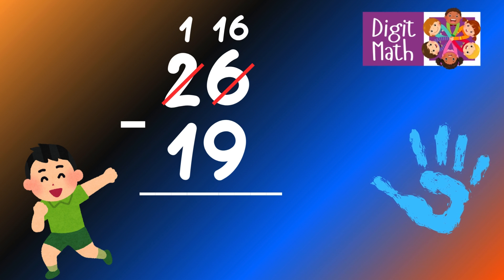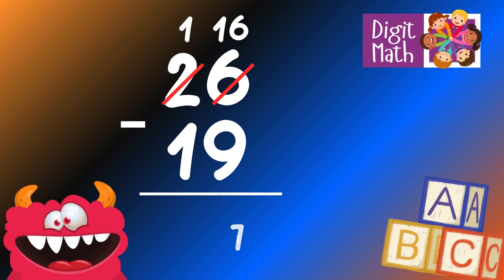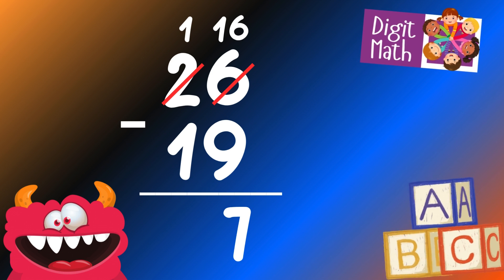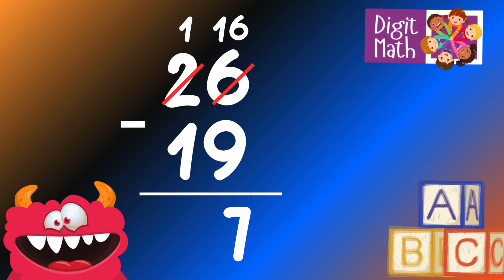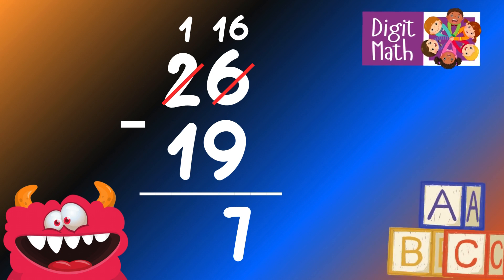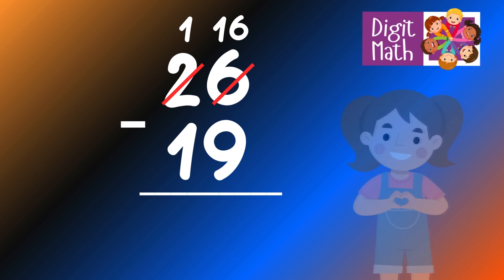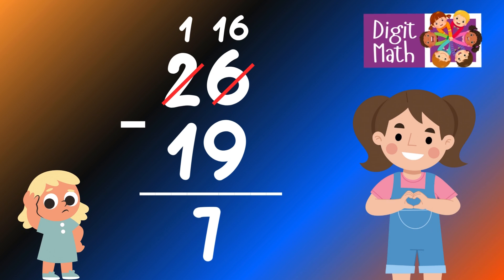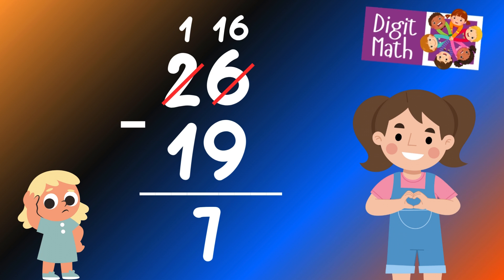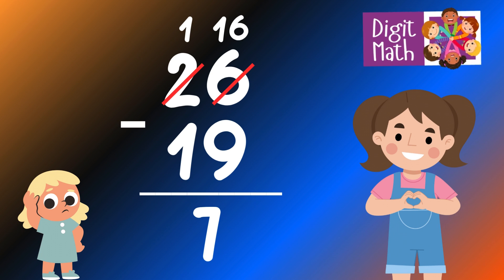Now we have 16 in the Units column. Subtract 9 from 16, which equals 7. In the Tens column, we now have 1. Subtract 1 from 1, which equals 0. So the final result is 26 minus 19 equals 7.